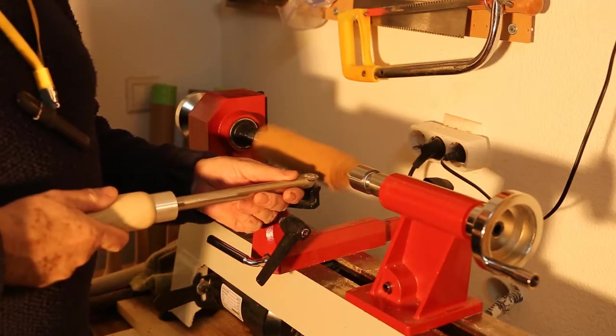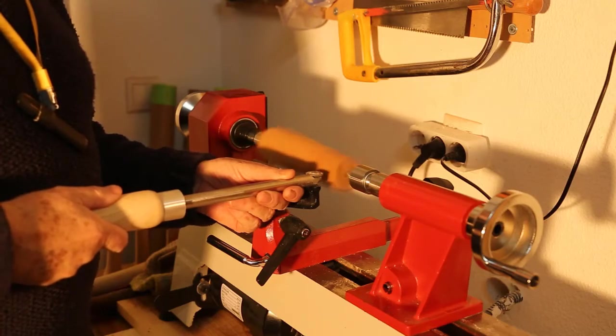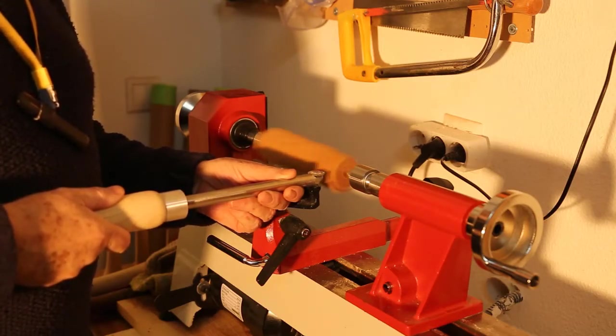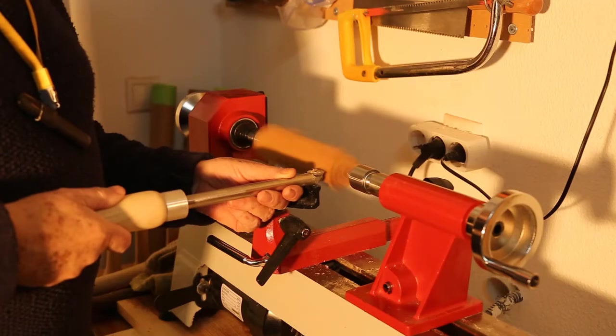And very, very slowly and very carefully move the carbide cutter towards the wood. Once it begins to cut, you need to go very slowly and carefully.